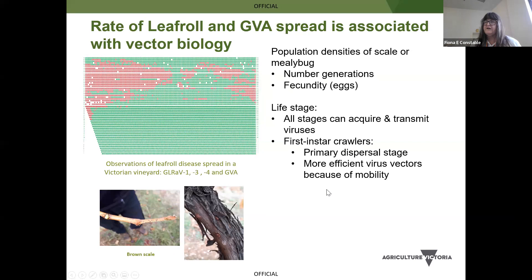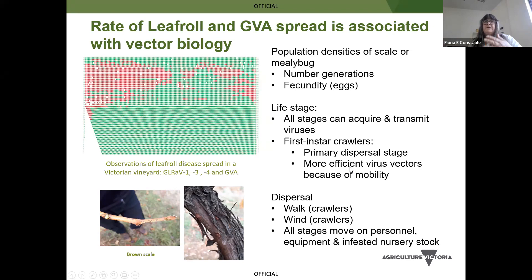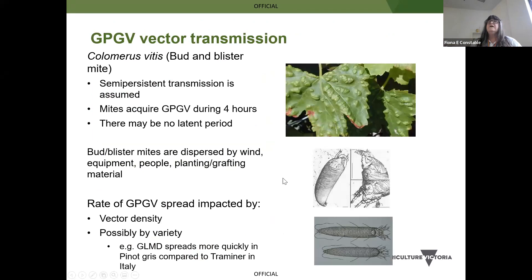Crawlers can walk between the vines, get caught up on the wind, and be carried from one vine to another. All stages of mealybug and scale can move on your equipment, on infected nursery stock, and on people. If you've got an infestation, work in your cleaner areas first and move to the infected areas — don't go from something heavily infested into something that's not so infested. Grapevine Pinot Gris virus is transmitted by Colomerus vitis, which is your bud and blister mite. Like the others, it's semi-persistent transmission. The mites acquire the virus really quickly — within four hours — and can almost immediately transmit it. They get dispersed on wind, equipment, people, and grafting material.